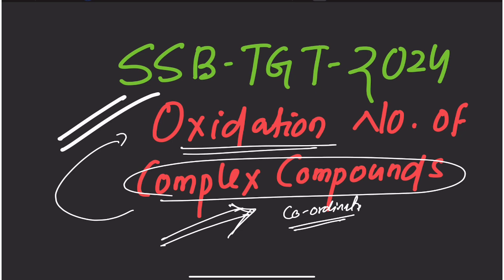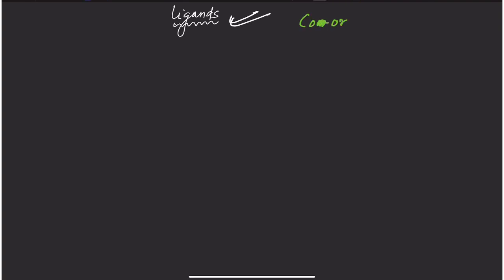Here we go. First, when we are concerned with a coordination compound, we go to the central metal atom. The central metal atom is from the D-block and F-block elements. The species that surround the central metal atom are called ligands.